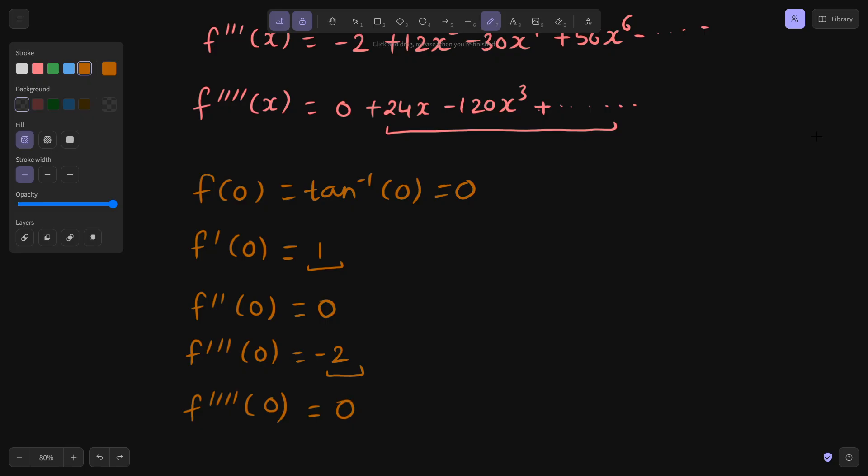Can we find fifth derivative? At least one good term I want. So that's why I am doing so. So let's find the fifth derivative. So that will be 24 minus 360x² and let it be plus dot dot. So fifth derivative as you can see at 0 will give us 24.